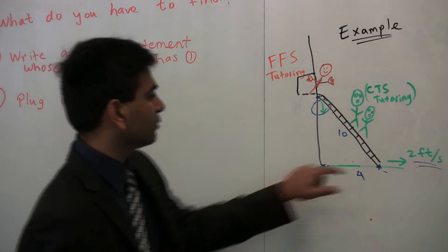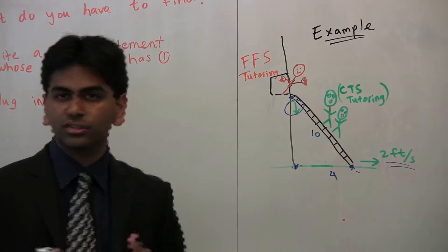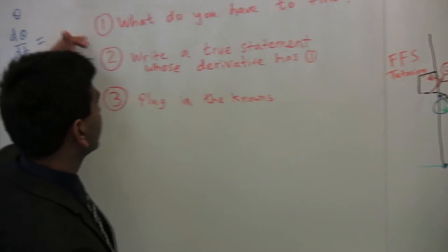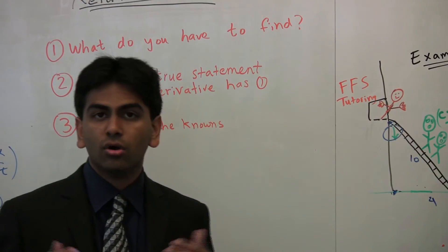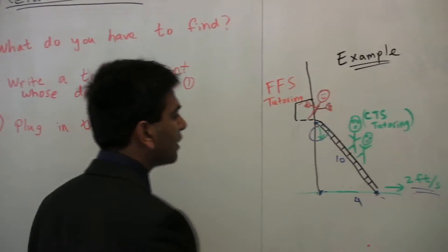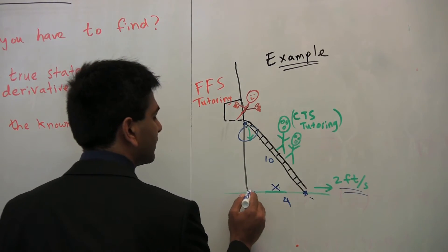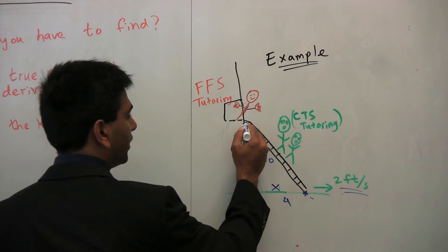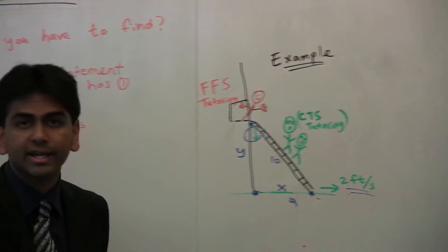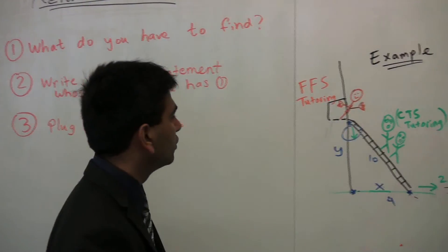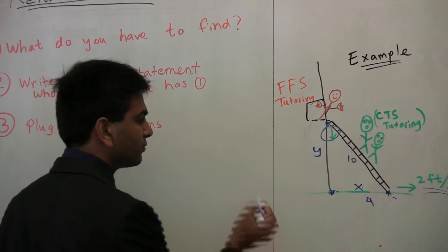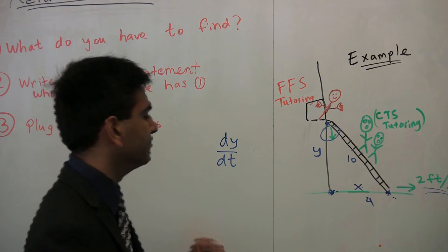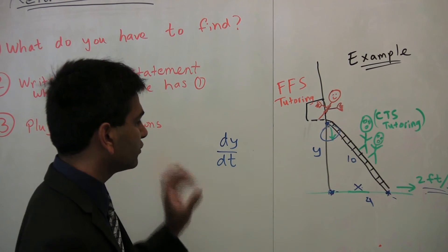Well, it's tempting to think, well, they're always going to be the same, but that's actually not the case. Let's actually figure out what it will be. So, using this process, the first question we ask ourselves is, what are we actually trying to find? Well, if we call x the distance from this point to this point, and y the distance from this point to this point, obviously, as the ladder is falling, x and y will change. And so, what we're actually trying to find is how fast y is changing, which is, in fact, dy/dt, the derivative of y, with respect to time.